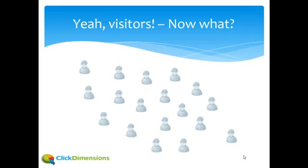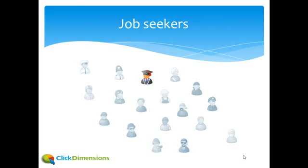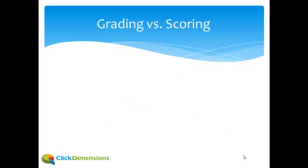Remember the first time you installed analytics on your website and you could see that you had visitors? That was great, but what did you do? Now with ClickDimensions Marketing Automation, you have micro tracking. You can see individually what leads and contacts are looking at and what interests them. It's a good start, but now we need to separate the job seekers from the curious from your real prospects. We do this through lead grading and lead scoring.